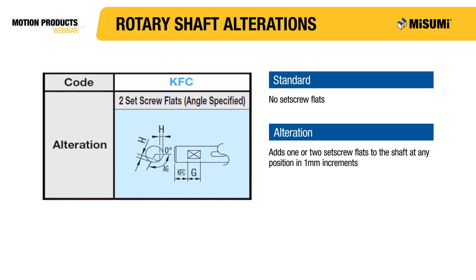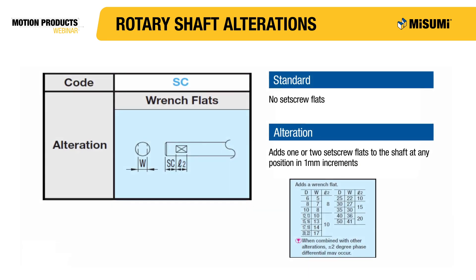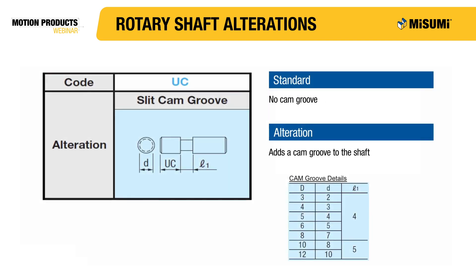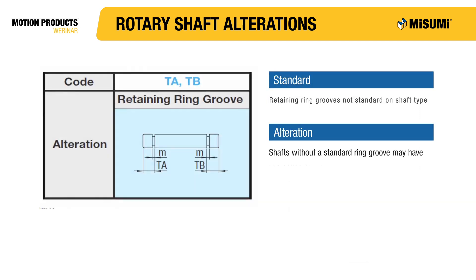Misumi also offers an alteration that adds two set screw flats at an angle in the same location, configurable in 15 degree increments. Wrench flats can be added in one millimeter increments anywhere on the shaft; however, the widths are predetermined based on the shaft diameter, allowing you to easily grip the shaft with a wrench when additional tightening is required. You can also add a slit cam groove to your rotary shaft to help guide a cam or cam followers, with the location configurable in one millimeter increments.